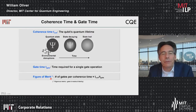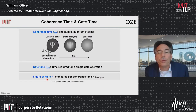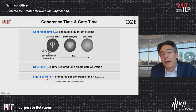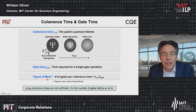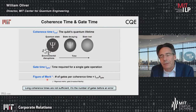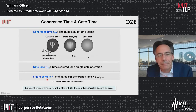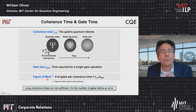There's a figure of merit: how many gates can I perform within the coherence time that I have? This is important because it's not enough for a qubit to have a very long coherence time — what's really important is how many gates can I perform within the coherence time available.